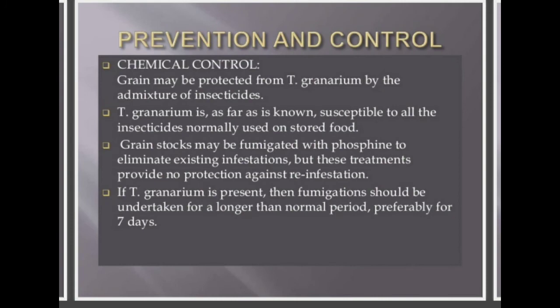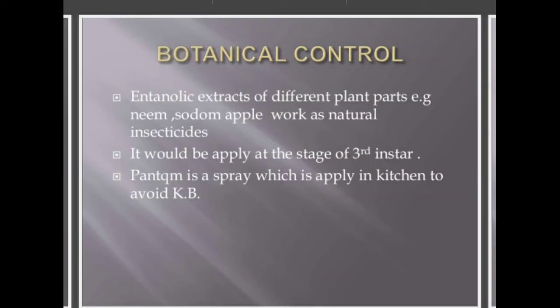For control, in chemical control, the grain may be protected from Khapra beetle by a mixture of insecticide, and it is susceptible to all insecticides. Grain stocks may be fumigated to eliminate existing infestations. In botanical control, we can apply botanical control at the third instar stage. The ethanolic extract of different plant parts like neem and sodom apple can work as a natural pesticide or insecticide.